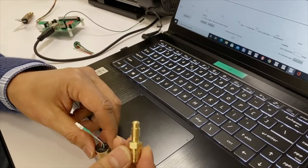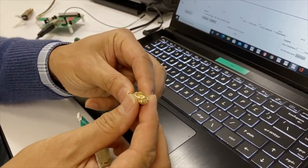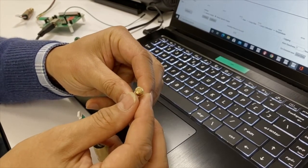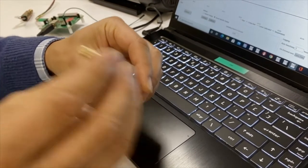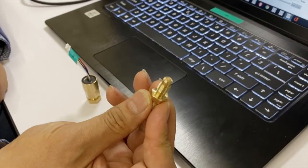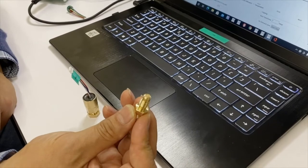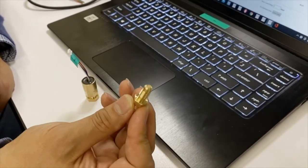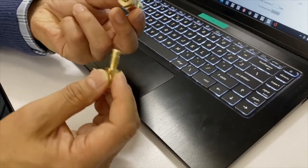This fitting adapter can be made in different versions for different fittings. This one has quarter MPT. On the adapter, there's a sintered bronze filter installed.